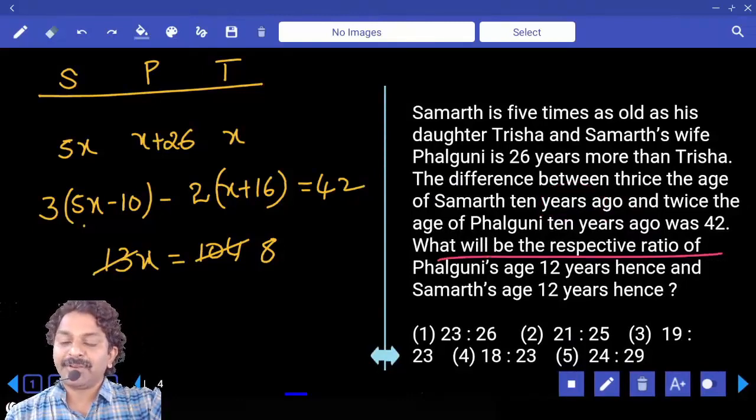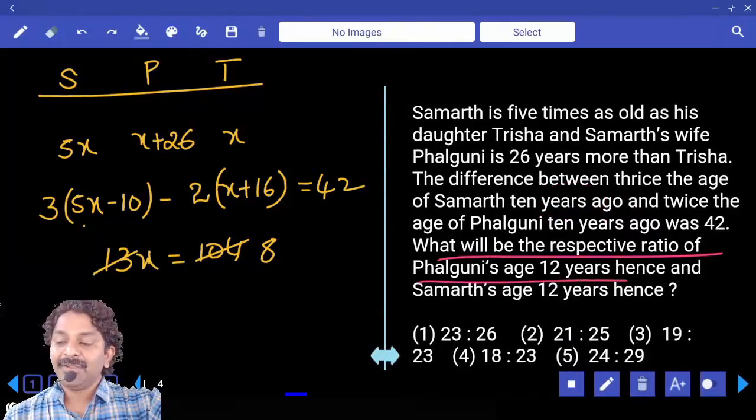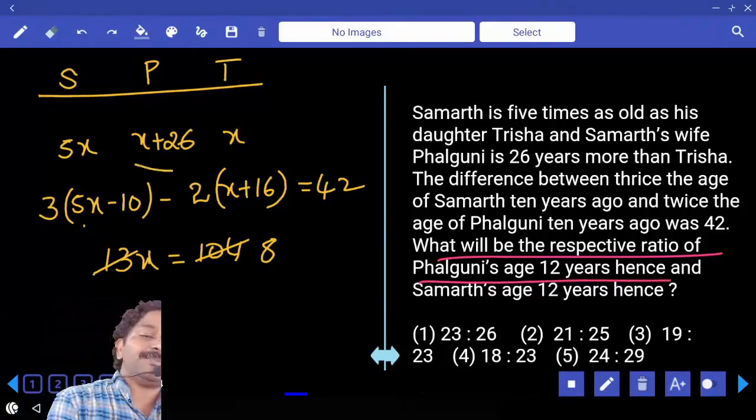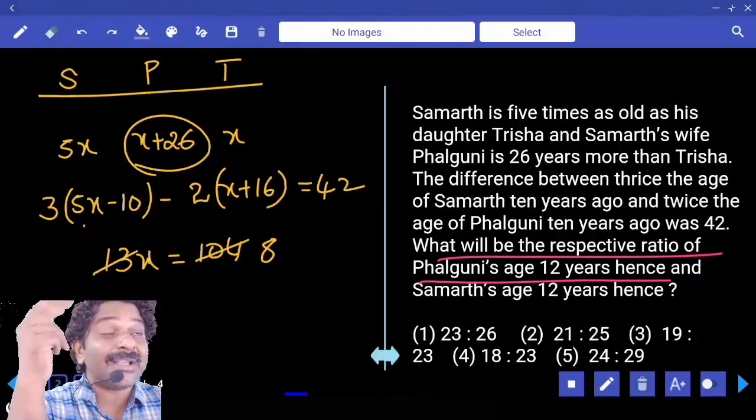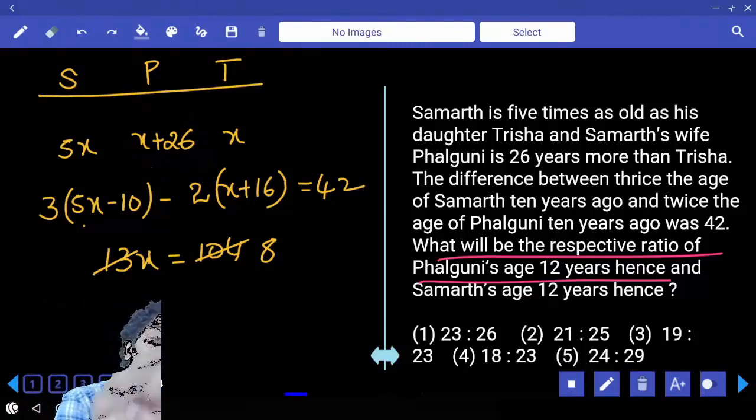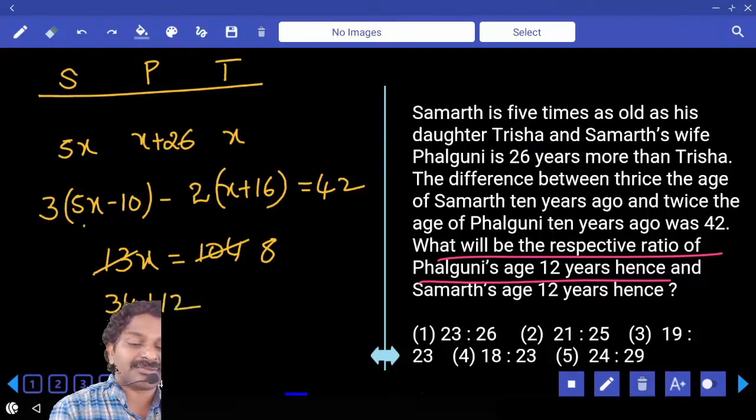What will be the respective ratio of Phalguni's age 12 years hence? Phalguni's present age is X plus 26 only, that means 8 plus 26 that is 34. After 12 years, plus 12.